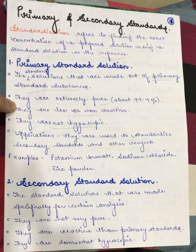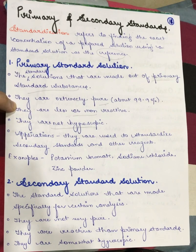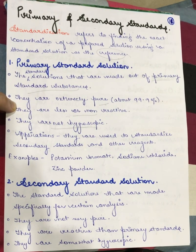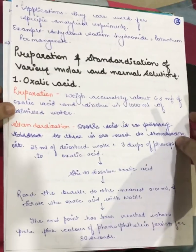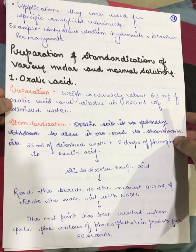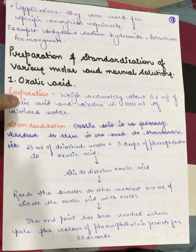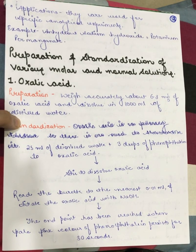Next, we have secondary standard solutions. These are solutions specifically made for certain analyses. They are not very pure and are more reactive than primary standards. They are somewhat hygroscopic in nature — not completely, but somewhat. They are used for specific analytical experiments. Examples include anhydrous sodium hydroxide and potassium permanganate.